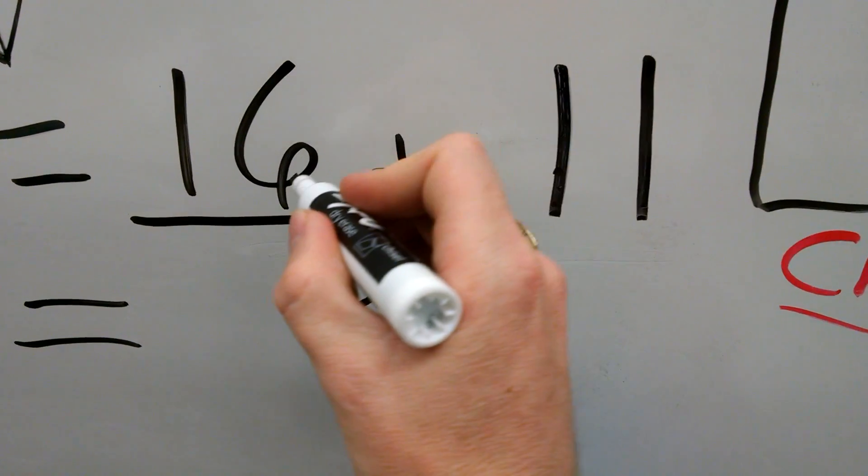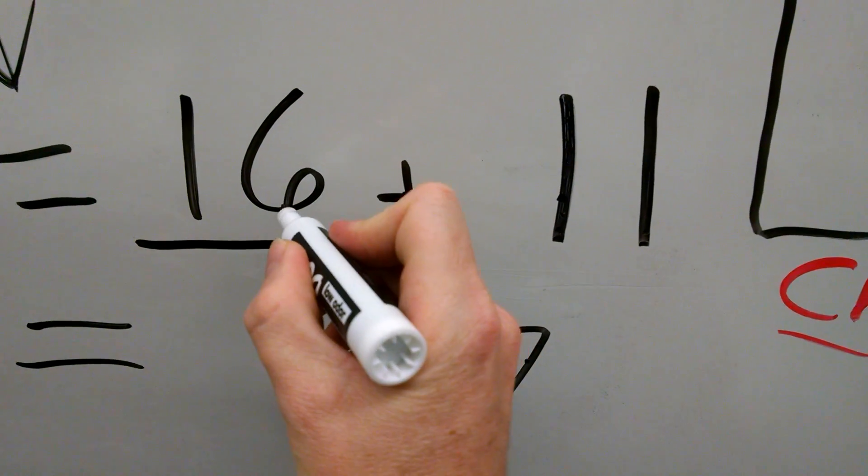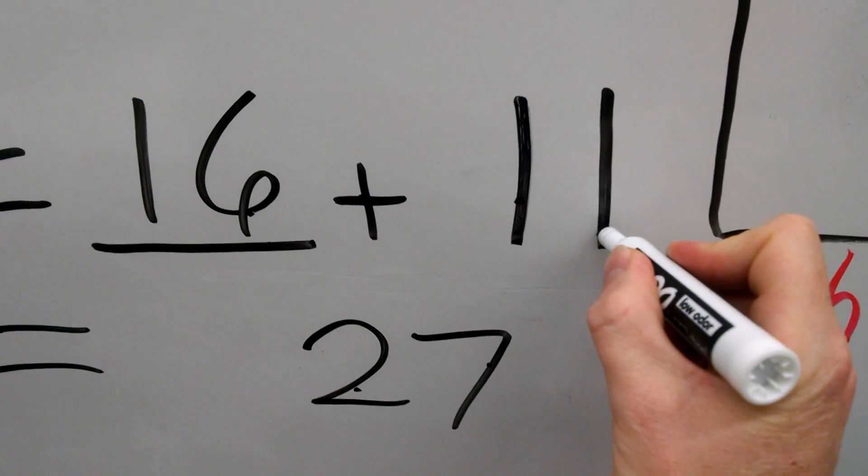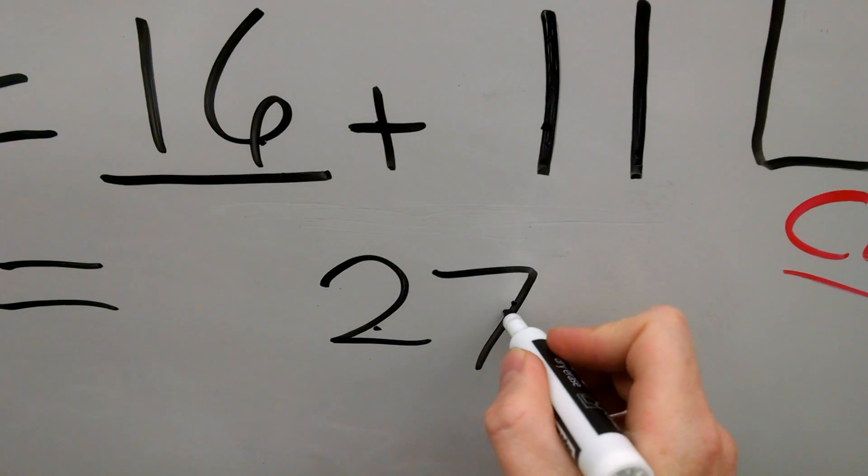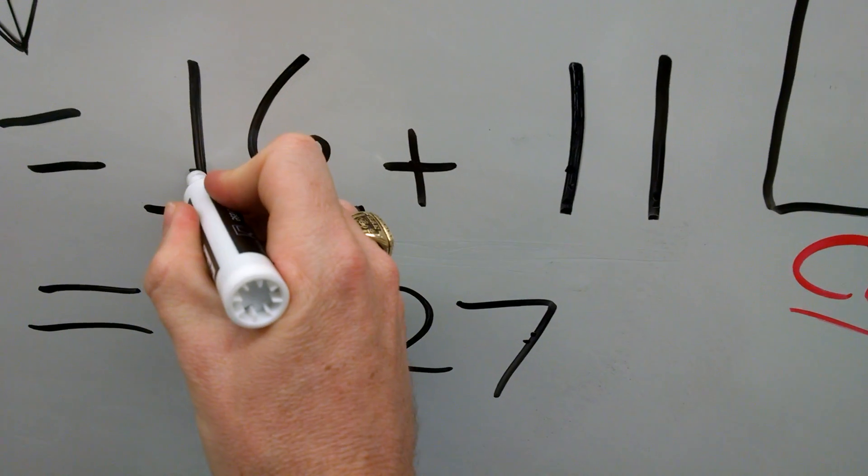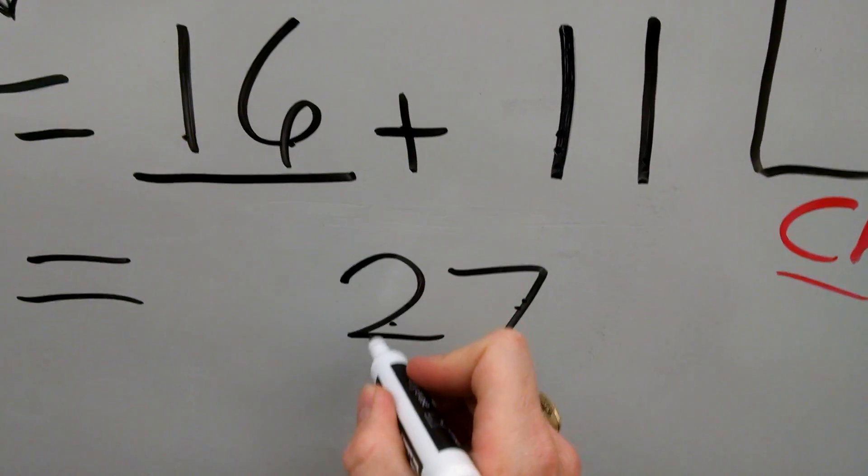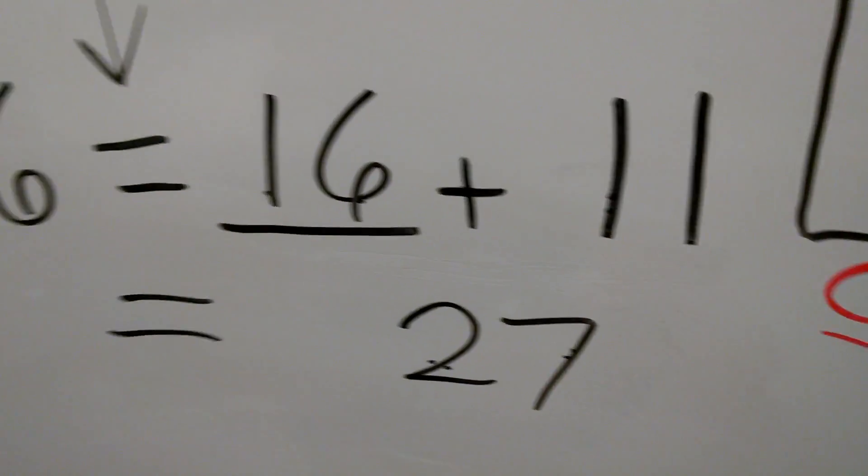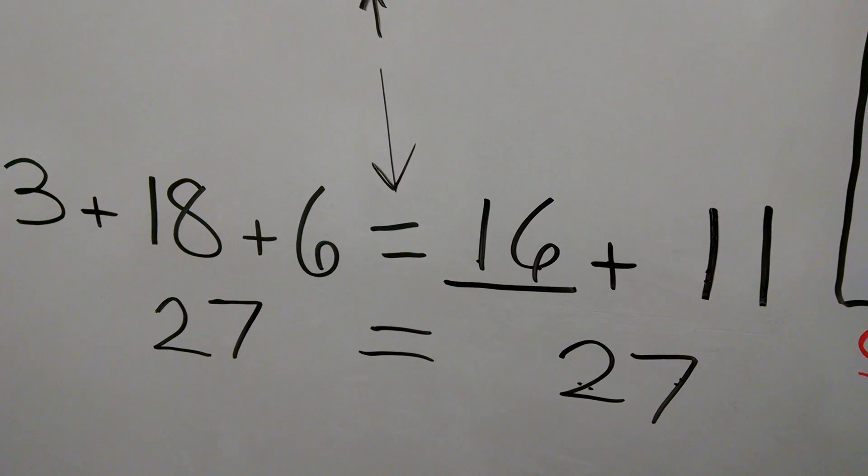And if I want to check my work, then I try and do the opposite. 6 plus the 1 gives me 7. 10 plus another 10 gives me 2 tens. And so there we have balanced equations.